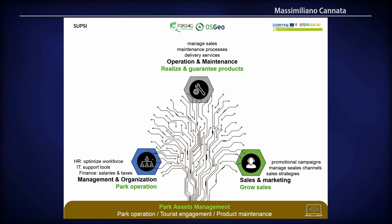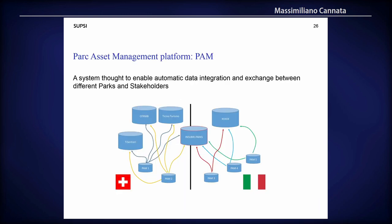The last thing I want to show is the park asset management, which we name PAM. The idea was to have an application that can manage data and information for the park and also be connected with other tools and databases. This is particularly relevant for the Swiss tourism sector, where there are different levels of authority with automatic exchange of information flowing from the confederation level down to the municipality level. Information entered at one endpoint is automatically dispatched to all levels. For the Italian side this was not the case, but the idea was to provide tools that can be used this way in Italy in the future.